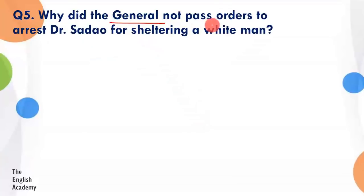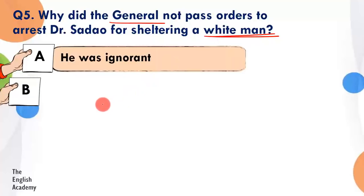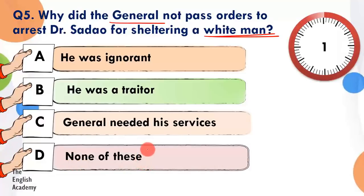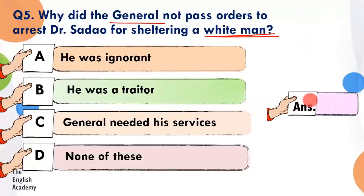Question number 5: Why did the general not pass orders to arrest Dr. Sadao for sheltering a white man? Option A: he was ignorant. Option B: he was a traitor. Option C: the general needed his services. Option D: none of these.